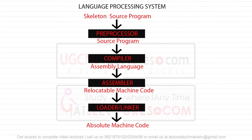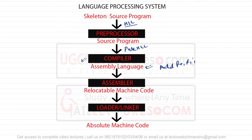Next is the compiler. The compiler takes a source program which is a pure high-level language program and translates it to assembly language. Assembly language can be something like `ADD R0, R1`. The compiler translates your high-level language program to this kind of assembly language code.